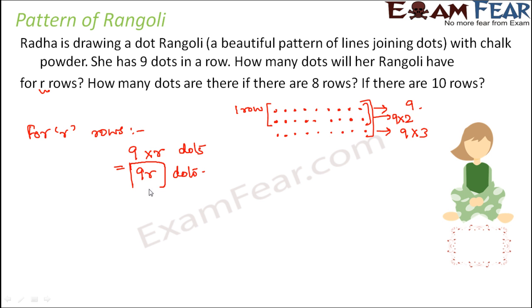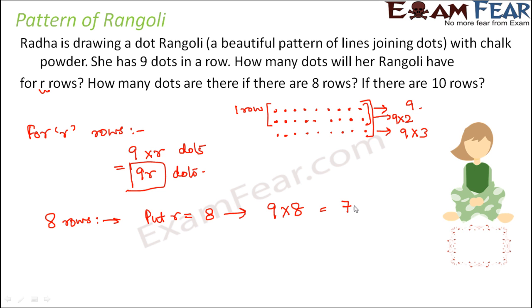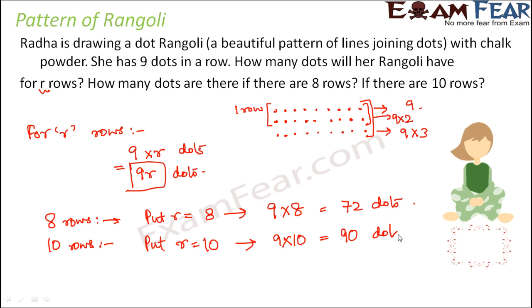With this formula you should be able to find the number of dots for any number of rows. For eight rows, R is equal to 8, so you get 9 into 8, which is 72 dots. Similarly, for 10 rows, R is equal to 10, so this becomes 9 into 10, which is 90 dots. In this fashion you can find out the total number of dots for any number of rows.